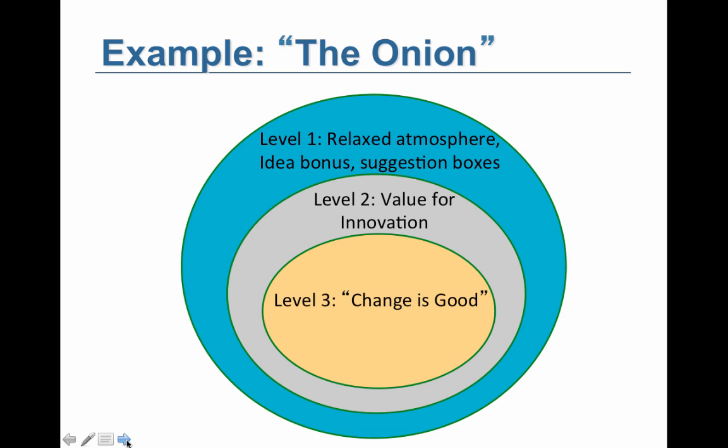Let me work through an example to make sense of this. Level one — things I observe: a relaxed atmosphere, an idea bonus, and suggestion boxes. Level two — the value I could connect to that: we value innovation. Level three — ask why. Why do we value innovation? We might say because change is good. We believe at our core that change is good, and because we do, that results in those observable things. If we can see a strong connection all the way through, we are going to have a strong culture.